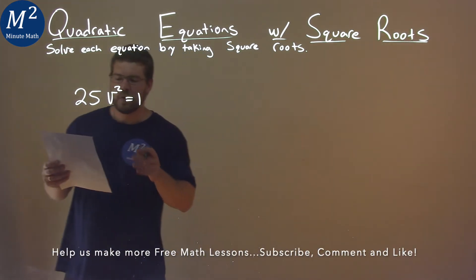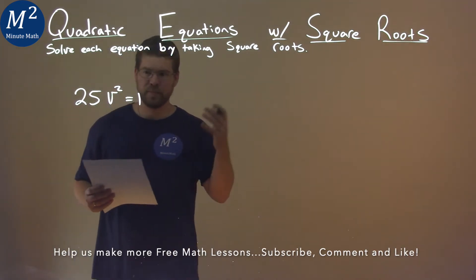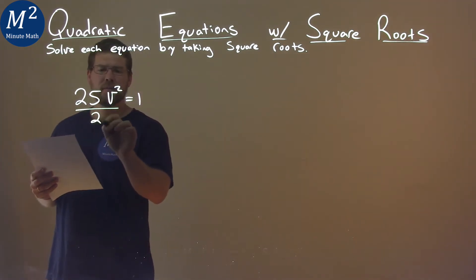What I want to do first is, I want to get v squared by itself. So I'm going to divide both sides by 25.